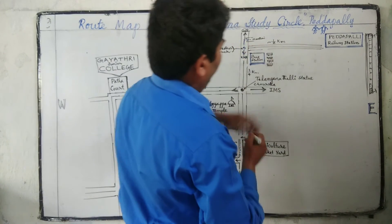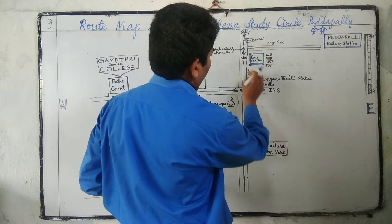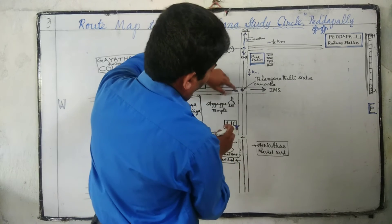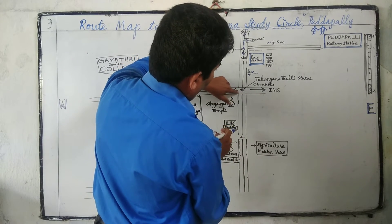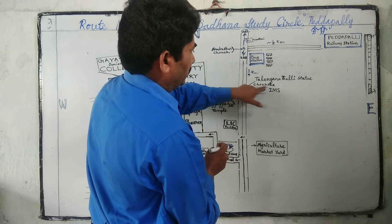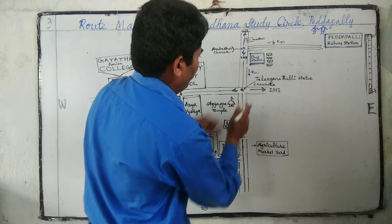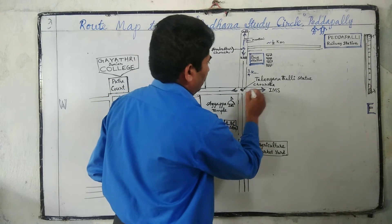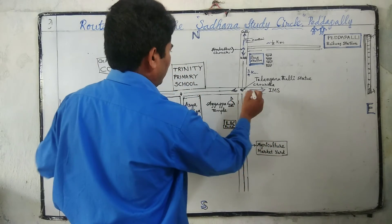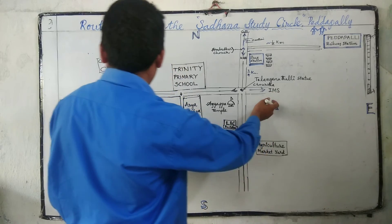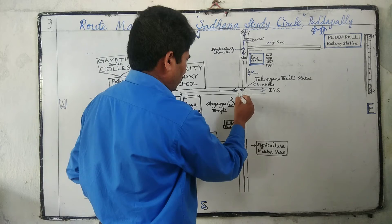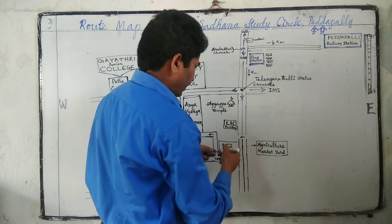Here we have Pedapalli bus station. After some distance we can reach the Telangana Talli statue — this is a Chaurasta. On the east side is Indian Missionary School, and on the west side is the Pathakot route, but we have to move along the Karimnagar route only.